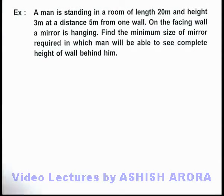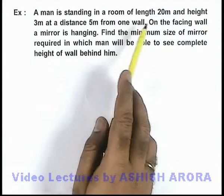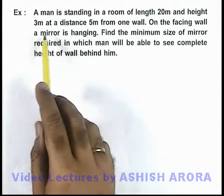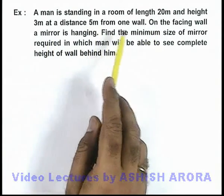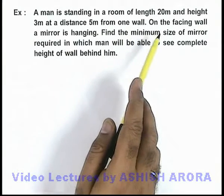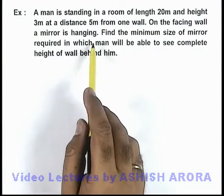In this example, we are given that a man is standing in a room of length 20 meters and height 3 meters at a distance 5 meters from one wall, and on the facing wall a mirror is hanging.